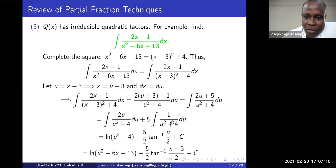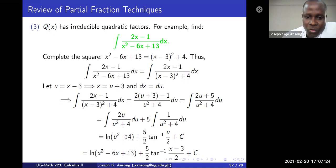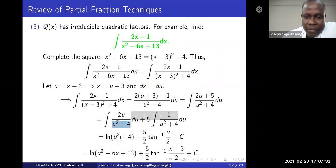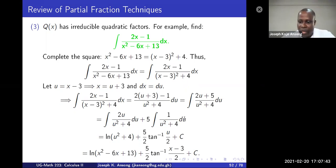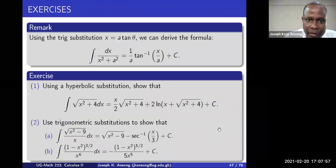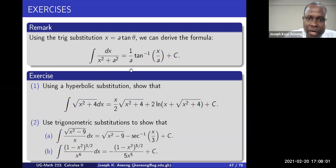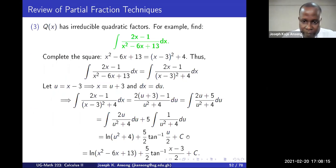The first fraction is 2u over (u² + 4) du, which integrates directly because the derivative of the denominator is just the numerator — giving ln(u² + 4). The second fraction is 5 times 1 over (u² + 4) du. For this we apply the trig substitution result: the integral of 1 over (x² + a²) equals (1/a) arctan(x/a) + C.